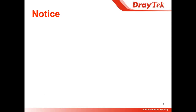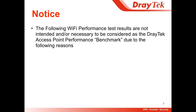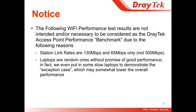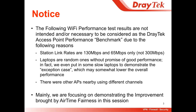Before we proceed to our content, there is an important notice. The following Wi-Fi performance you are going to see is not intended or necessary to be considered as a Stratech ASAP performance benchmark. The station link rates are 130 Mbps and 65 Mbps only — not running with the full link rate. Also, the laptops we use are random ones without parameters of good performance. In fact, we even put in some slow laptops to demonstrate the exception case, so they may lower the overall performance. There were also other APs nearby using different channels. So, we are mainly focusing on the improvements brought by Airtime Fairness in this session.